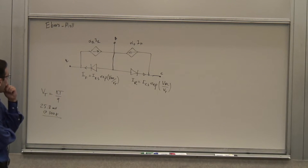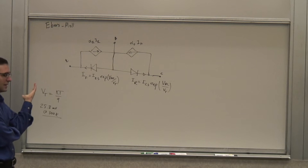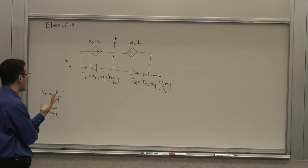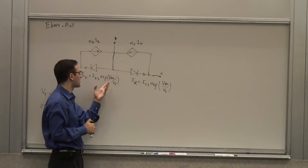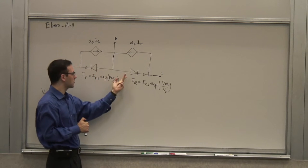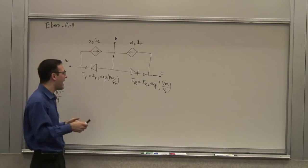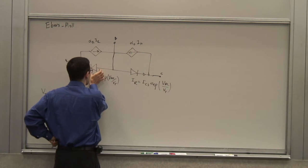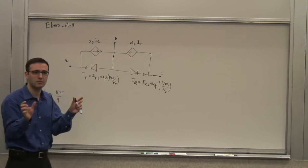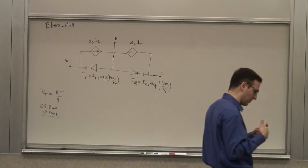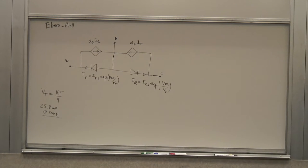This is a general model that applies in any of the four regions of operation, depending on which of these diodes are forward or reverse biased. When both junctions were reverse biased — the transistor was 'off' — what you had was the capacitance of these depletion regions. From a DC perspective it was like an open circuit, but from an AC perspective it's like two capacitors connected, which are junction capacitors.